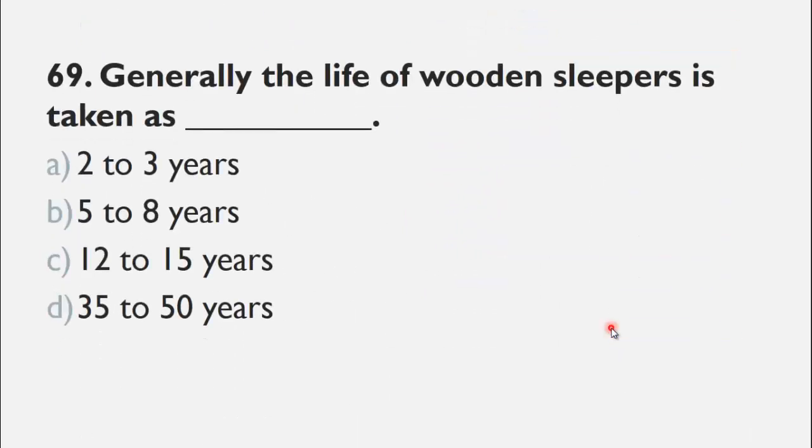MCQ number 69 is: Generally the life of wooden sleeper is taken as ___. A) 2 to 3 years, B) 5 to 8 years, C) 12 to 15 years, and D) 35 to 50 years. The right choice for this question is C, 12 to 15 years.